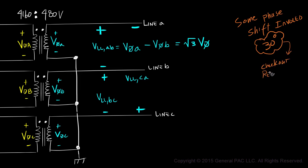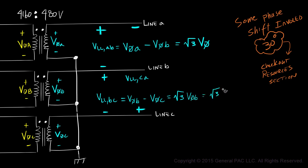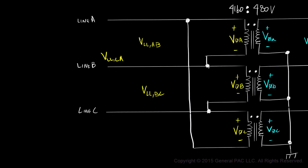Again, this is covered in great detail in a different module. So what's the line-to-line voltage between line B and line C? It's phase B voltage minus phase C voltage, which is equal to the square root of 3 times the magnitude of phase B voltage — or simply the square root of 3 times the magnitude of any phase voltage, assuming a balanced set of voltages. When first learning this, it helps to visualize this relationship between the line-to-line voltage and phase voltage using actual numbers.